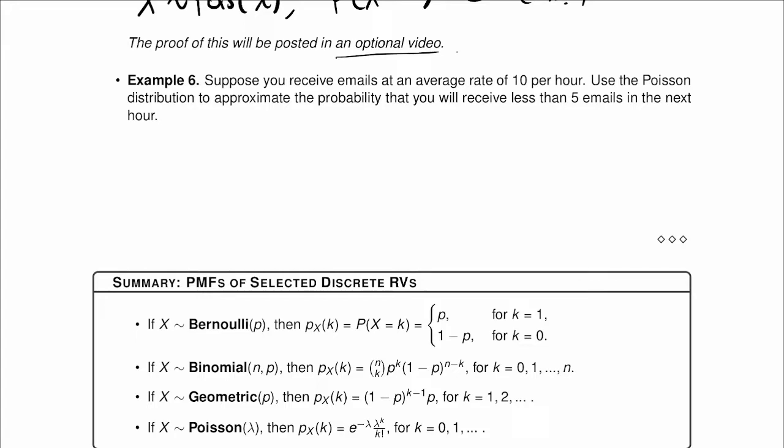Example. Suppose you receive emails at an average rate of 10 per hour. So this is our parameter lambda. Use the Poisson distribution to approximate the probability that you will receive less than 5 emails in the next hour.